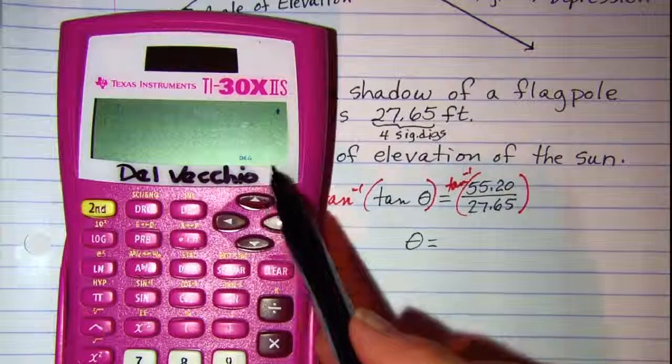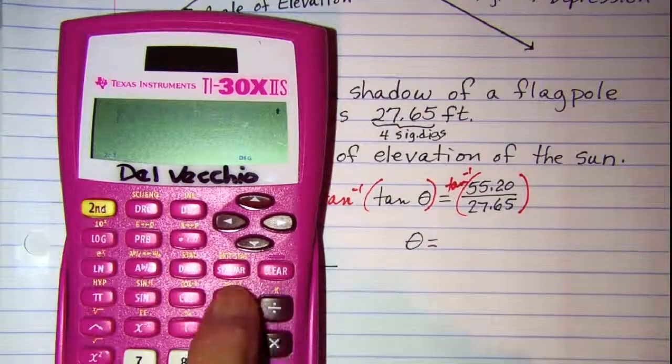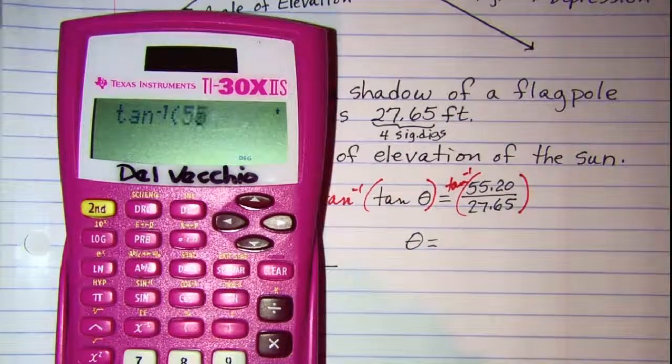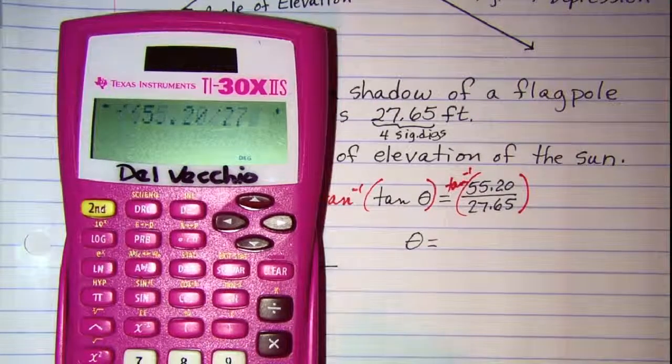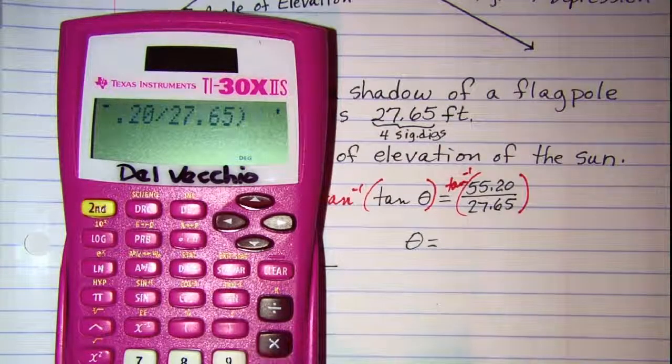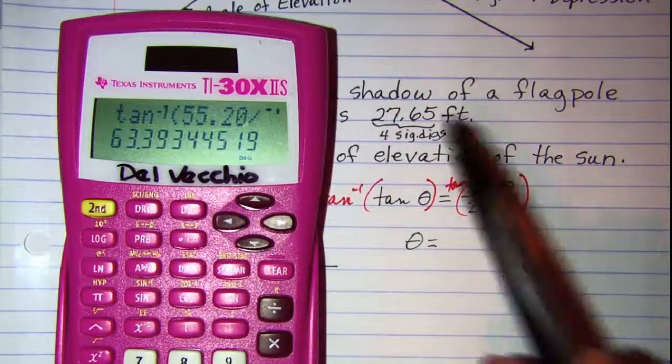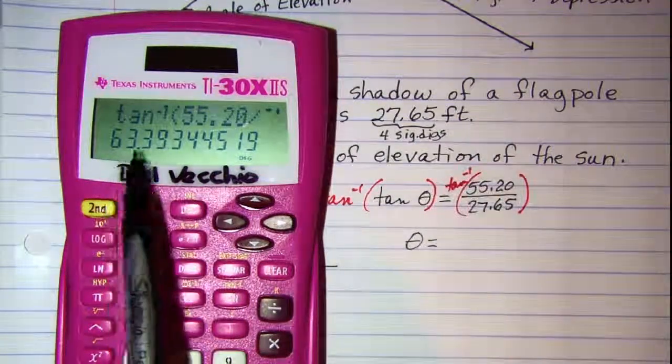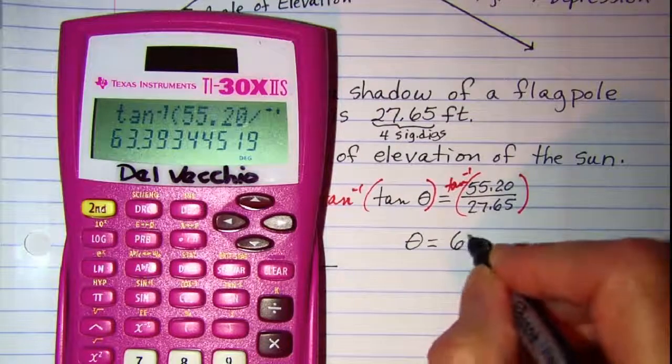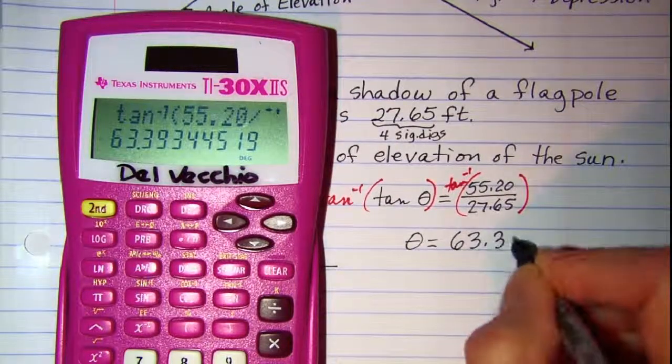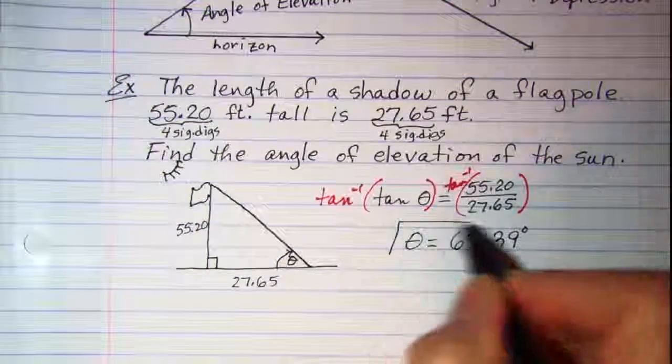Make sure that you're in degrees, and then we want inverse tangent, 55.20 divided by 27.65. Close the argument and hit equal, and then we want four significant digits. So 63.39 degrees is the angle of elevation of the sun.